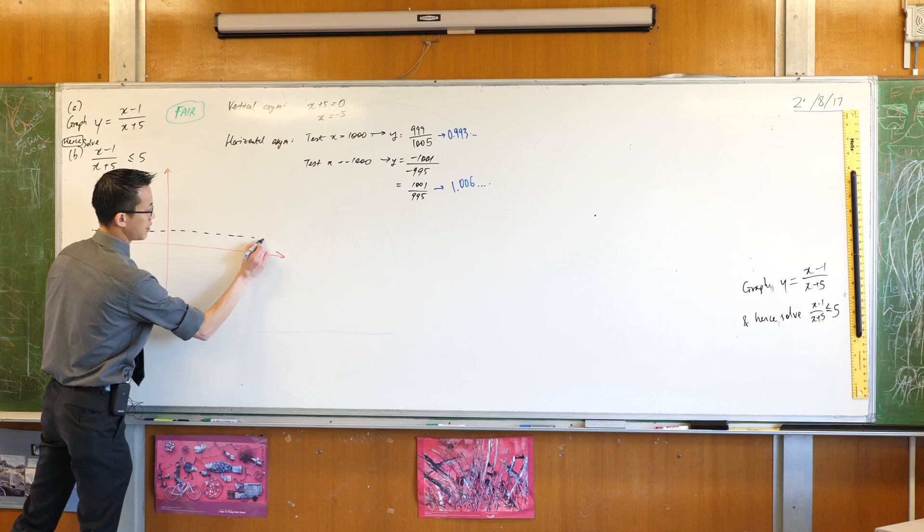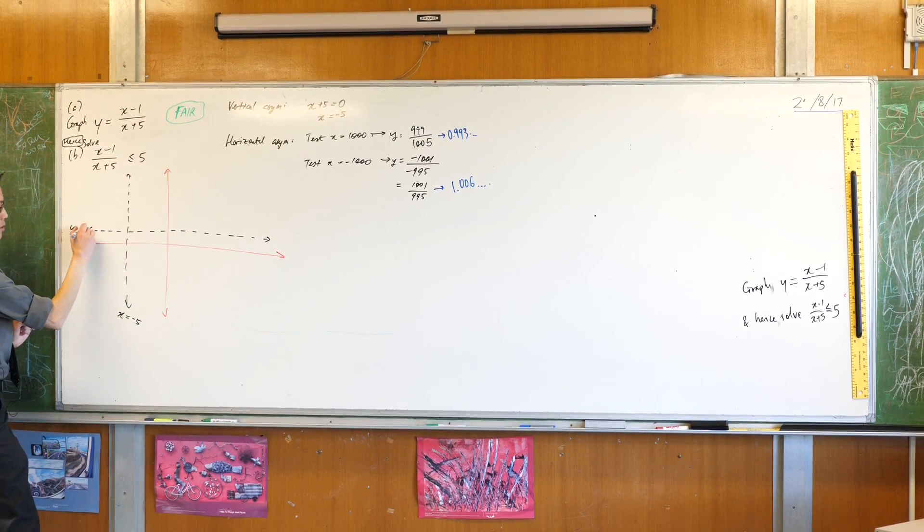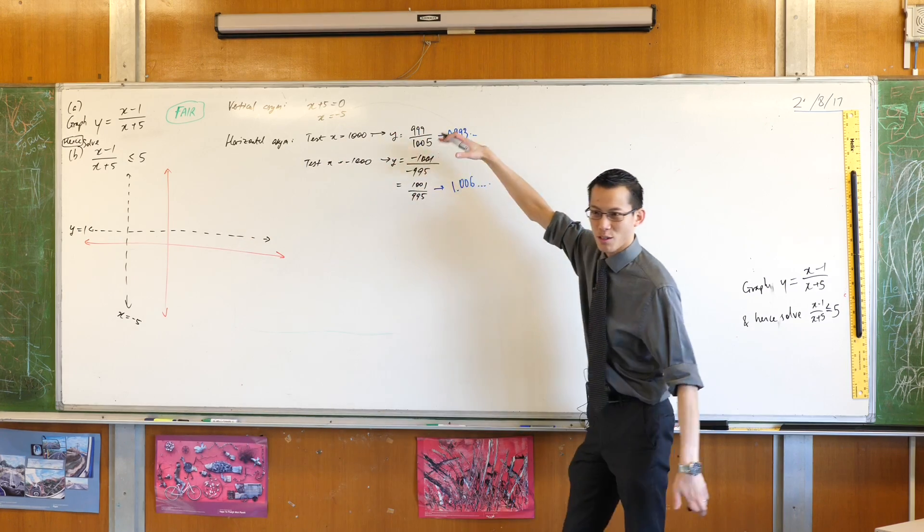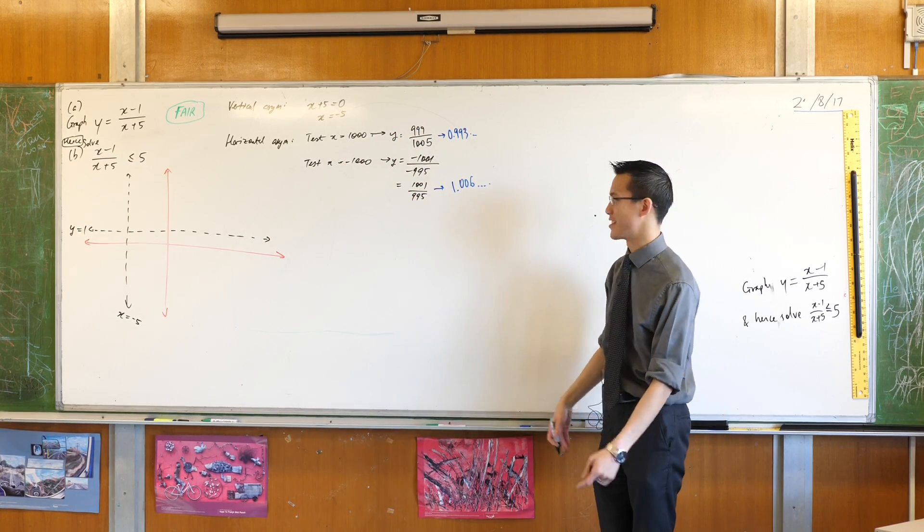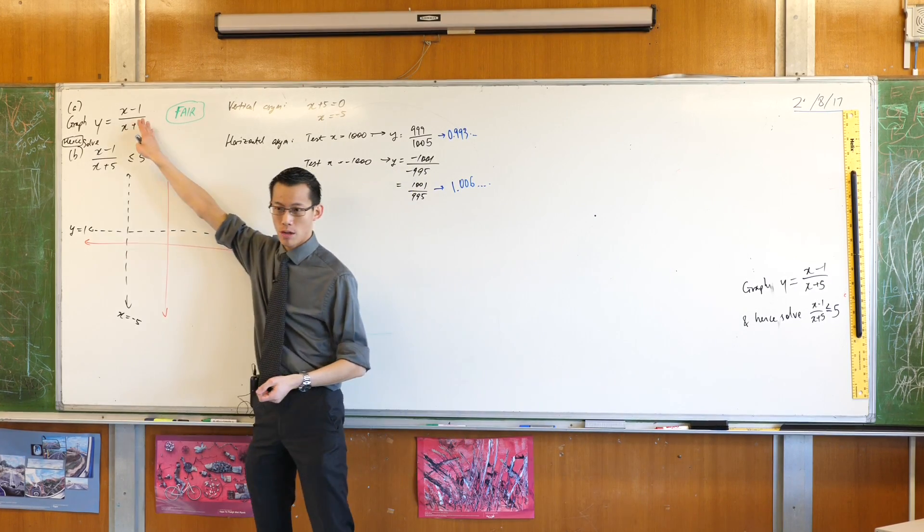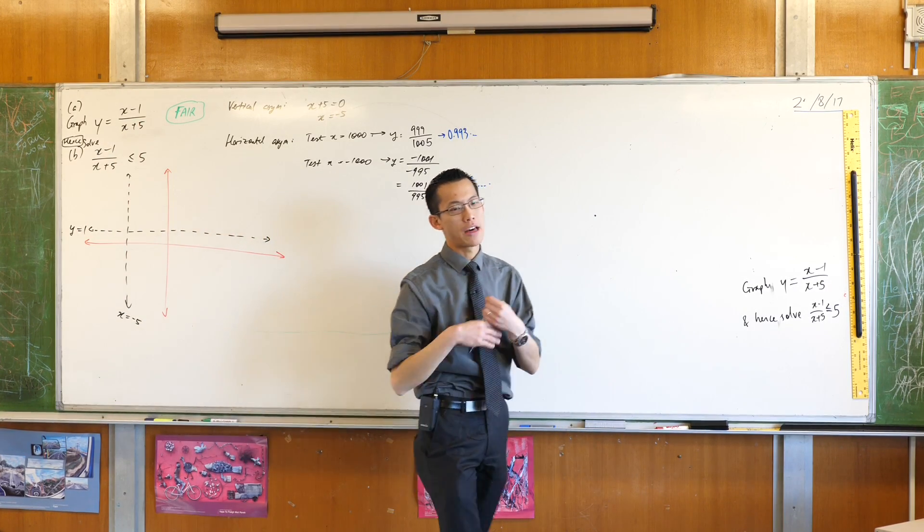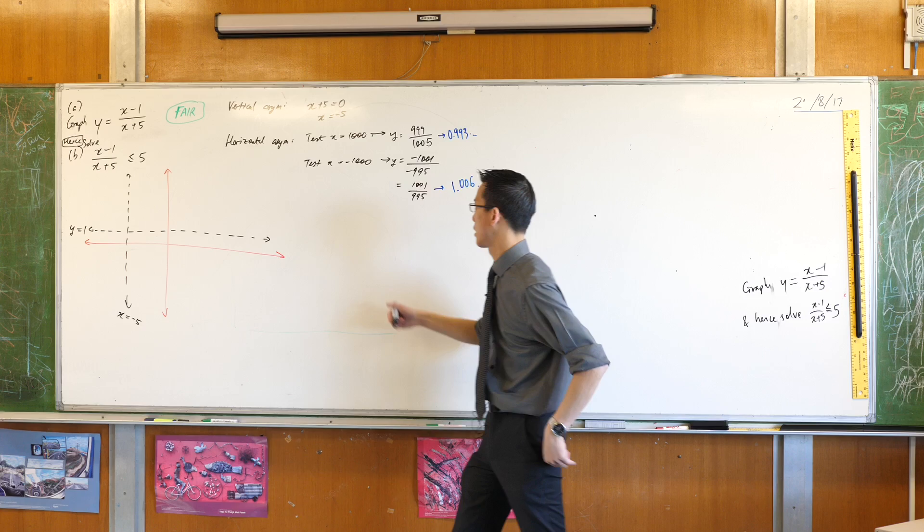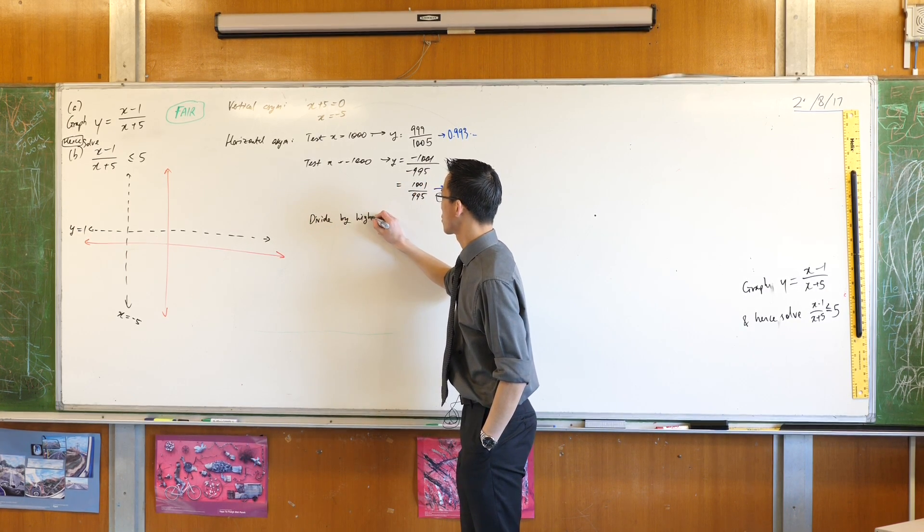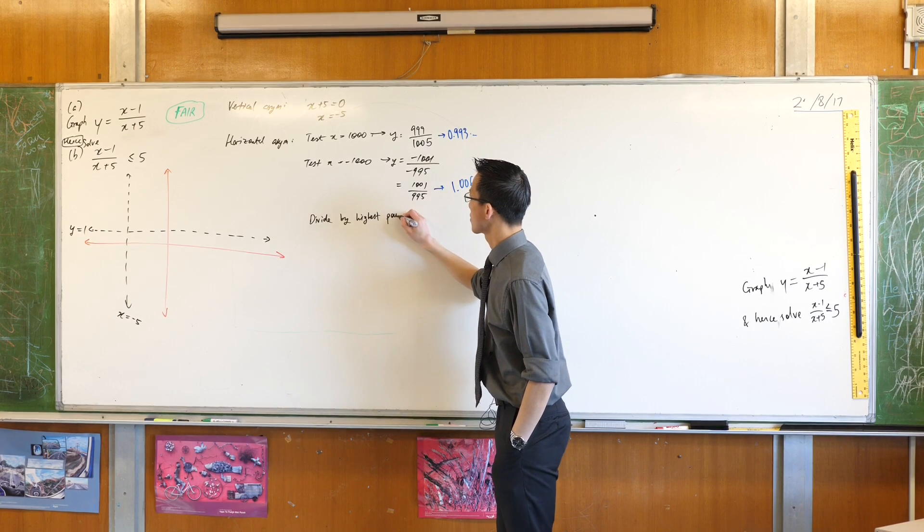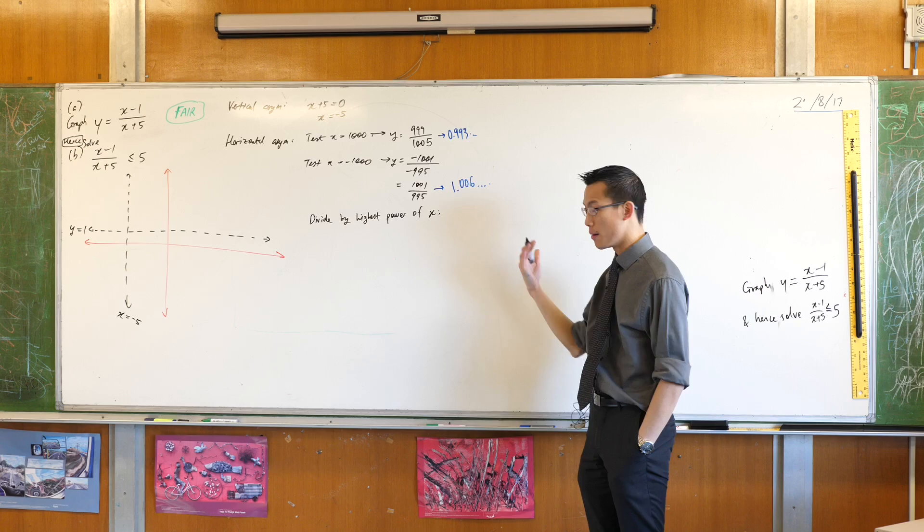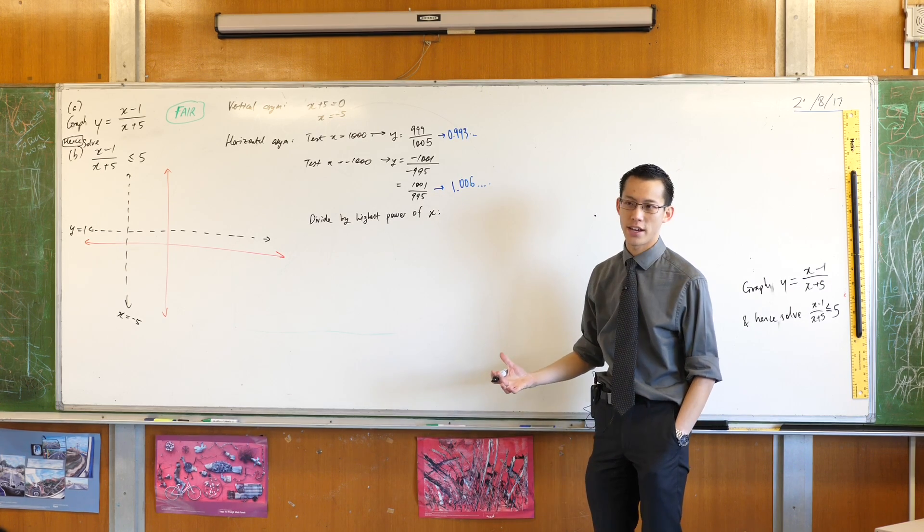I did say though that there's two pretty straightforward ways to work this out. If you don't want to, if this looks a bit inelegant and blunt instrument to you like I'm just testing values, another thing you can do is take your function and divide the top and the bottom by the highest power of x. Let me say that again. Divide by highest power of x. So if for instance you had x squared on the top and the bottom, you divide by x squared. In this case the highest power of x is just